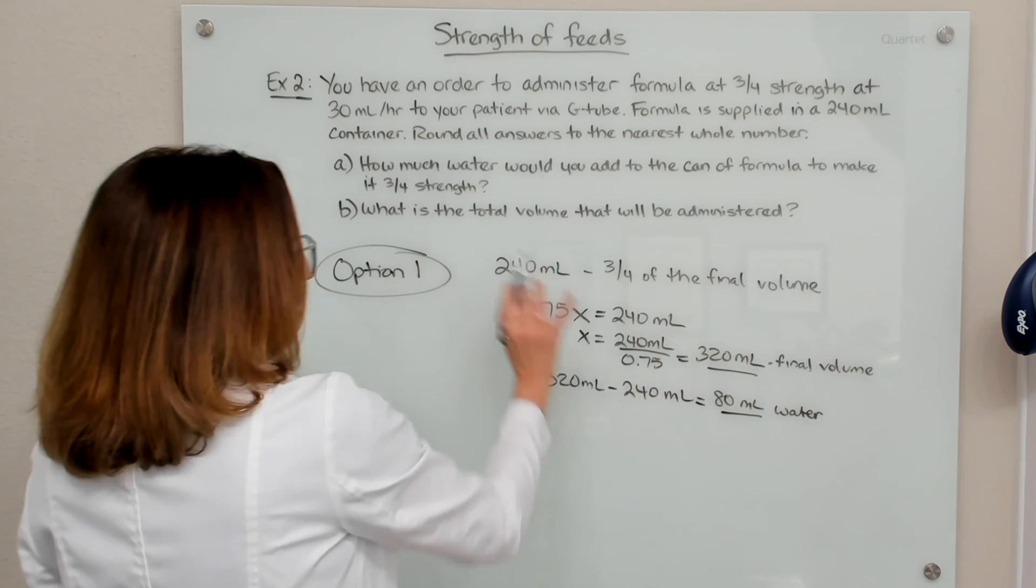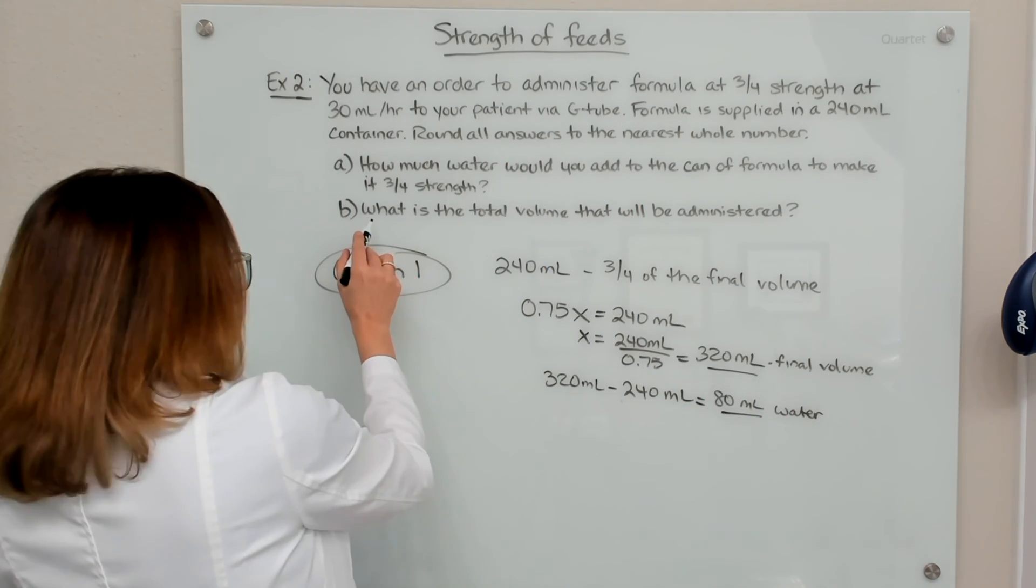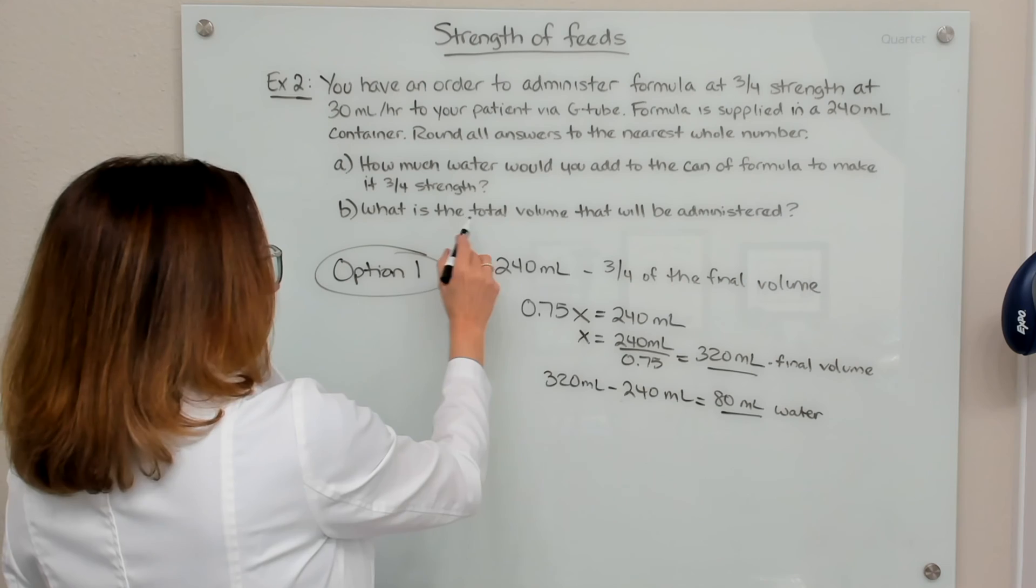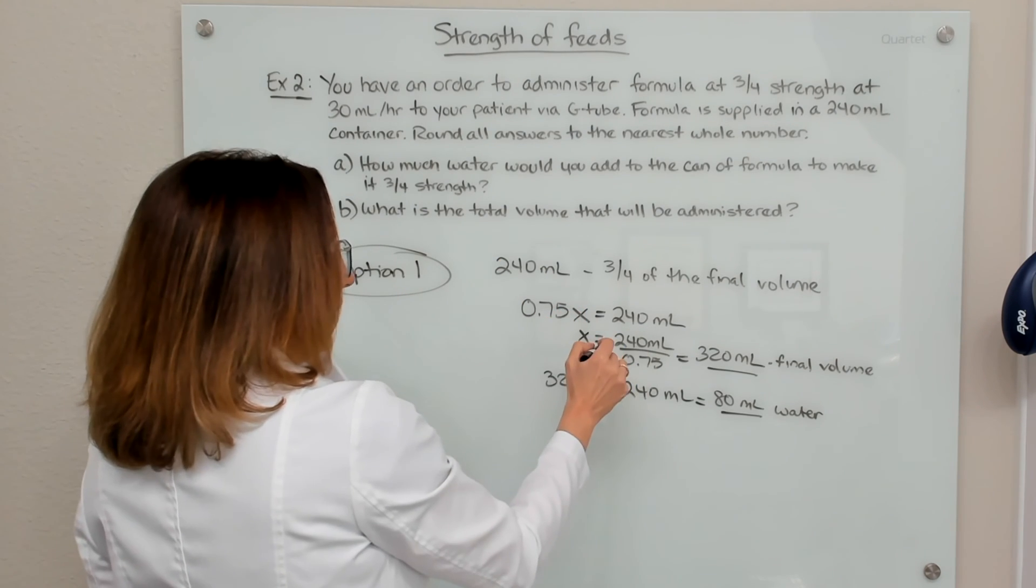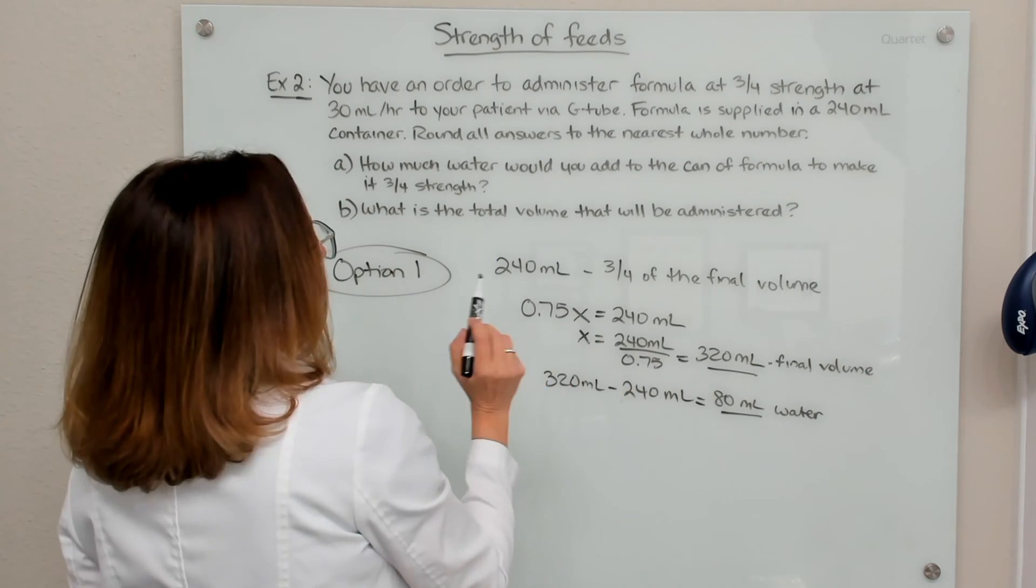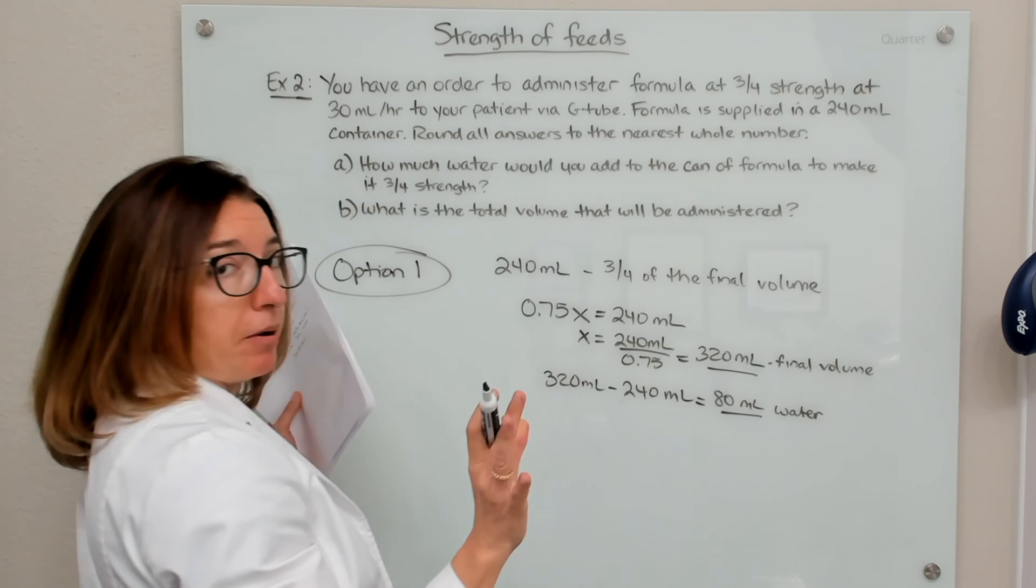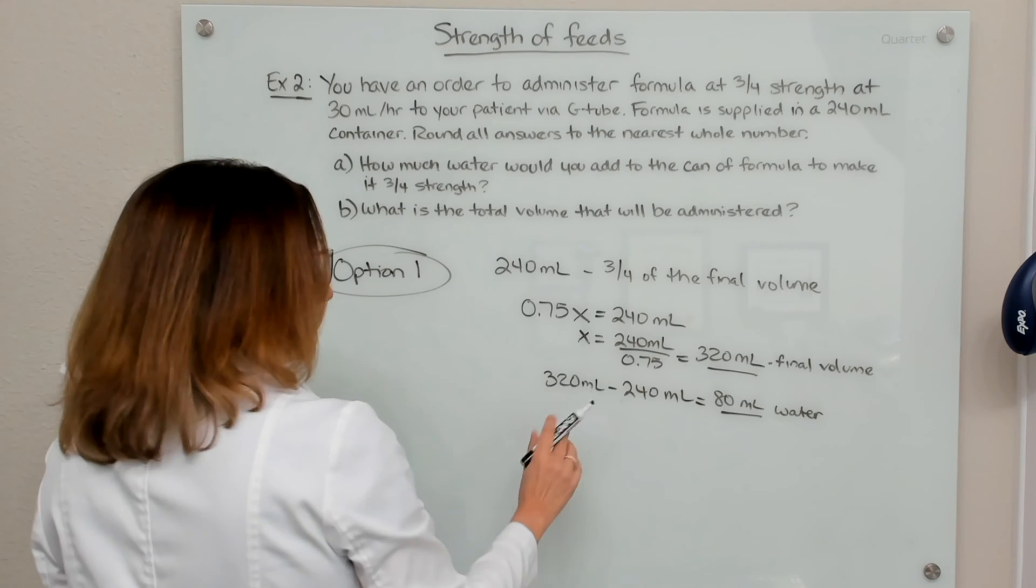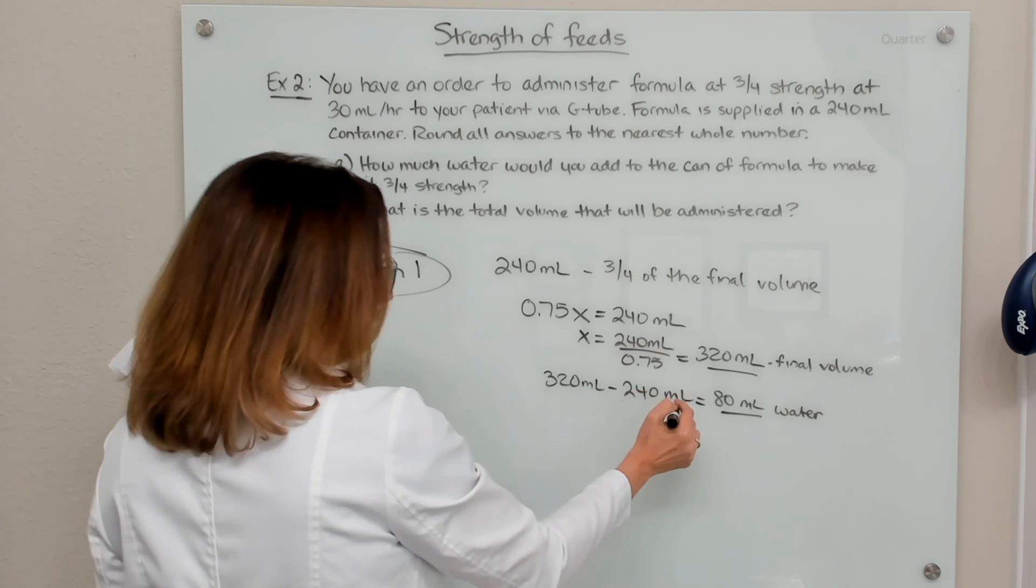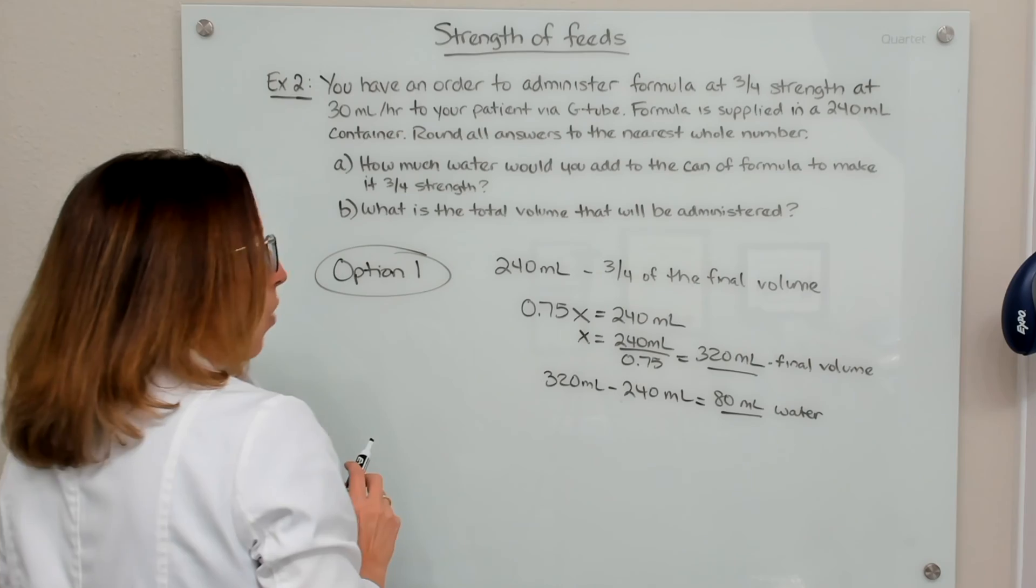Okay, so we actually ended up solving part B of this problem first, which is the total volume. And we did that with this algebraic equation. And then to figure out how much water, we kind of answered that part of the question second. So we took the total volume, subtracted out the formula volume, and that gave us the amount of water.